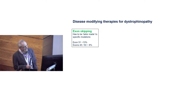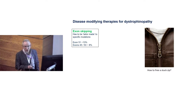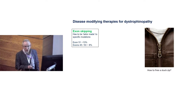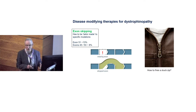Exon skipping is an alternative way of treating patients — already in operation. The easiest way to think about it is like a stuck zip: you restore the closure ability without correcting the broken area. You have a missing exon, and the exon skipping treatment — a daily medication — allows you to jump over that deficiency, complete the reading frame, and produce dystrophin.